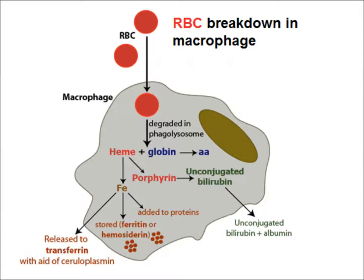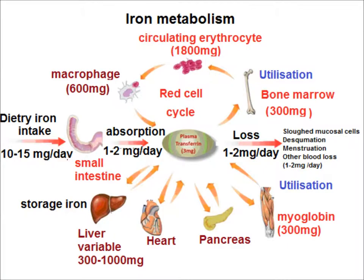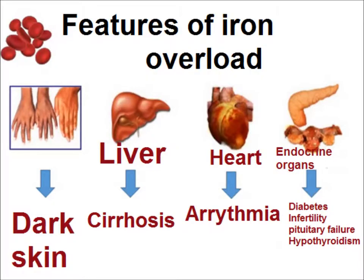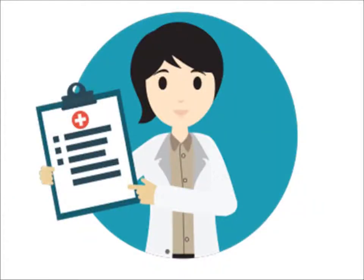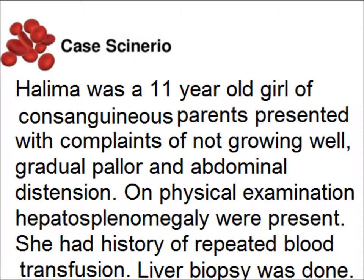In the body, RBCs are broken down in the reticuloendothelial system and the iron is reused. Only a small amount is lost from the body, and the excess iron is stored in the liver, heart, pancreas, and other endocrine organs. This leads to dark skin, cirrhosis, arrhythmia, and endocrine organ dysfunction.